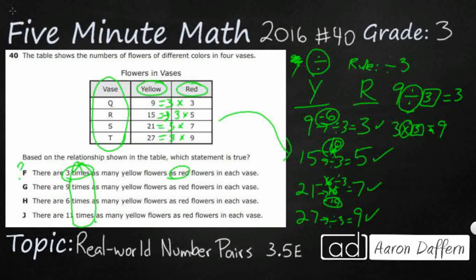There are nine times as many yellow, you can't use any of these other ones. Nine times, six times, eleven times. Now the only one that works is this three times. So our answer is going to be F.